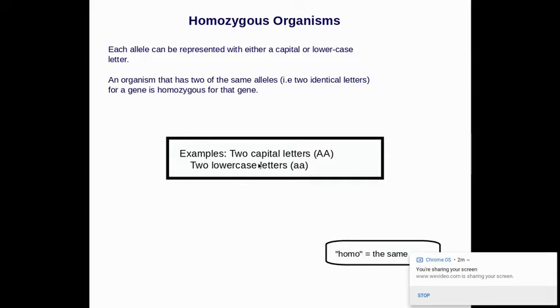So we just pick really any letter. What's best is when you're picking a letter, you pick a letter where the capital and the lowercase don't look the same. So for instance, like the letter C would not be a good letter to pick because a capital C and a lowercase c look the same. A's are great, R's are great, T's are great, because the capital and the lowercase are different. So an organism that has two of the same alleles, meaning two identical letters, for a gene is homozygous for that gene.